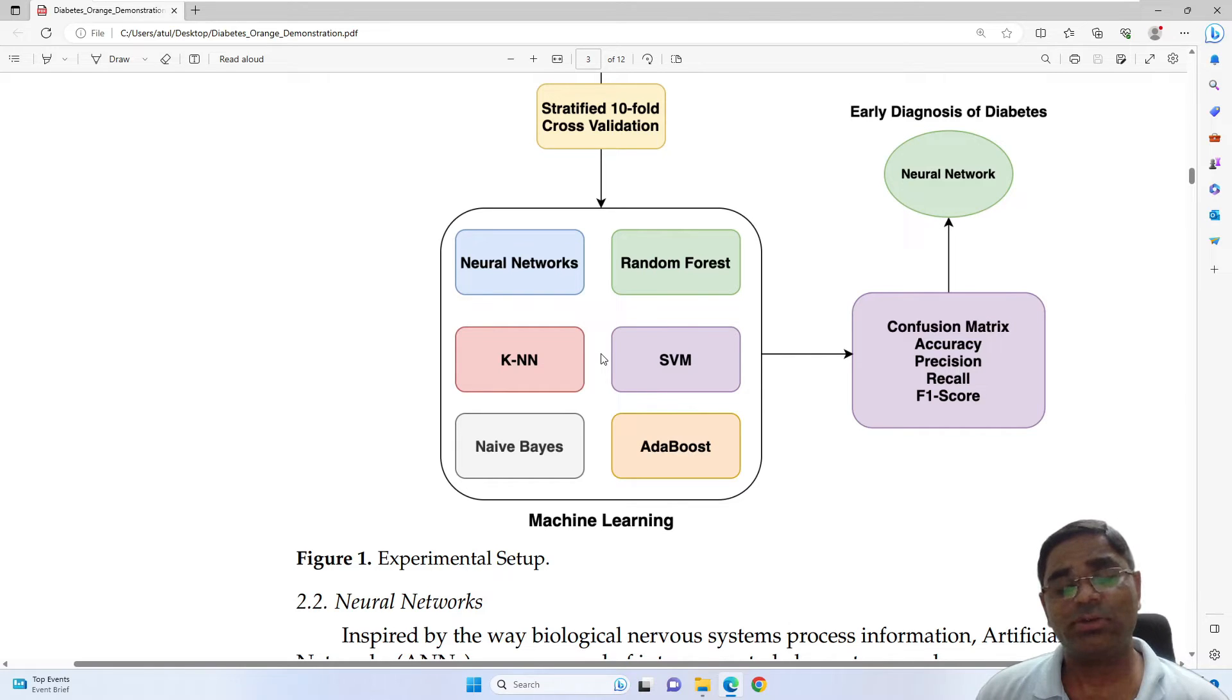And ultimately using these algorithms, we will create a model. And we will analyze these models by creating confusion matrix, that includes accuracy, precision, recall, and F1 score.